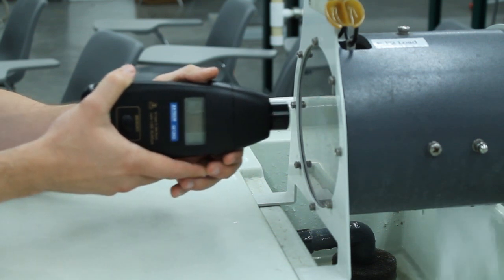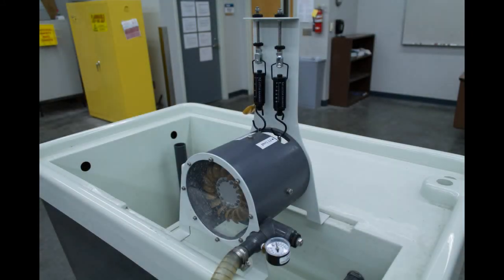Record both forces indicated on the spring balances. Reduce the rotational speed in increments of 100 RPM all the way down to 150 RPM by adjusting the screws on the spring balances. Record the forces on the spring balances at each speed.